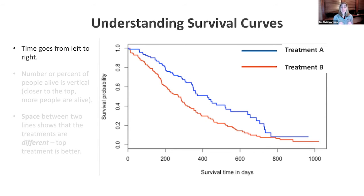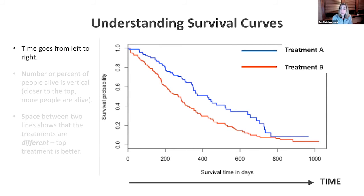The first step is knowing there are two treatments: one is in blue in this diagram, labeled treatment A, and one is in red, treatment B. The second thing to know is that time on this clinical trial goes from left to right, and it's represented on the bottom axis — that zero to 1,000, that's in days. Time goes from the beginning of the trial on the left to the end of the trial on the right.